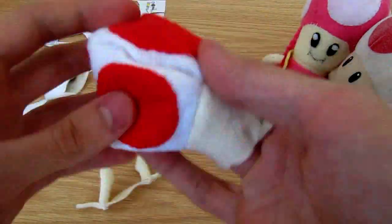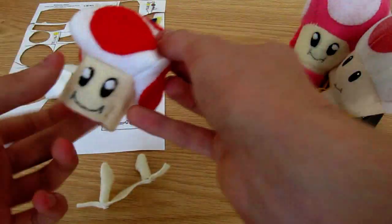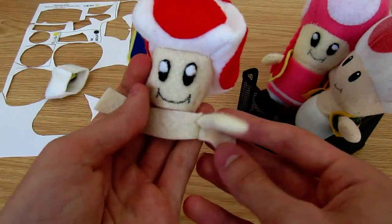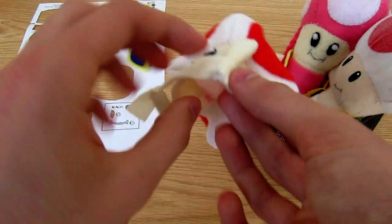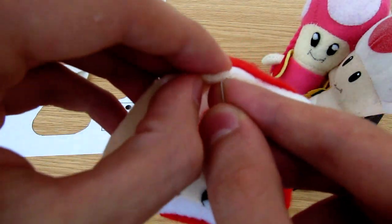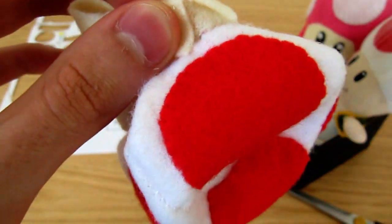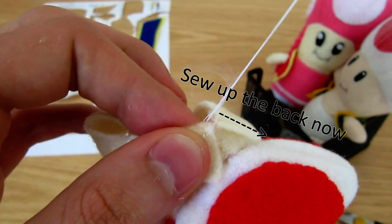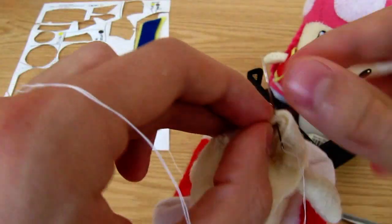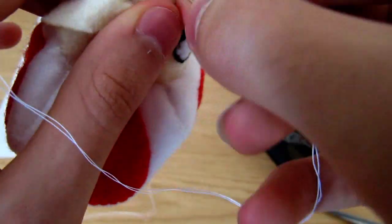Next, turn the head the right way out and stuff it a little. We're going to attach the body to the head, so start by attaching it at the back. I recommend that you sew up the back now too, though I didn't do it here. Then attach it at the front and go the whole way around. This part can be tight if you stretched the head while you were turning it the right way out, so be careful not to create folds in the fabric.